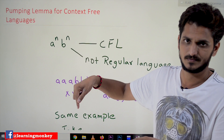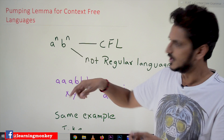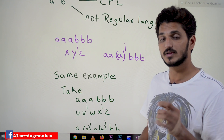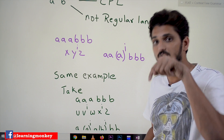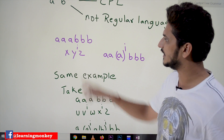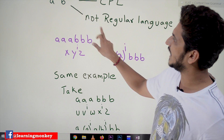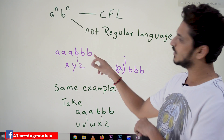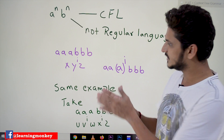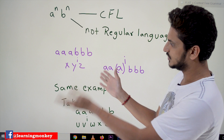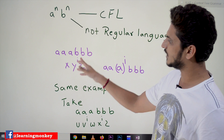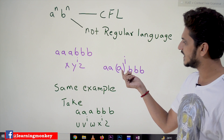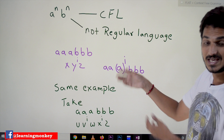Based on that, what is the pumping lemma for regular languages? We have taken a string like A A A B B B — the language where A is followed by equal number of B's. We divide this input string into three parts: X, Y^i, Z. We divided it into X as A A, Y as A, and Z as B B B. Y^i is the pumping variable.